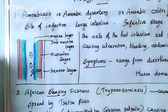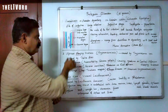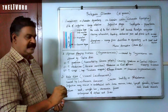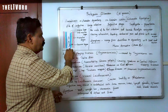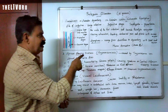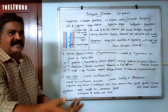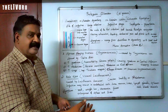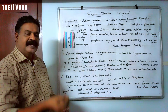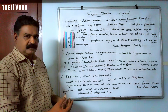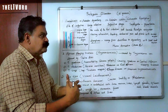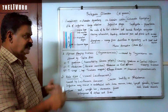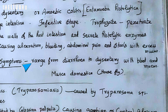The symptoms range from diarrhea to dysentery. Dysentery means passing stools with mucus and blood. Diarrhea involves frequent loose motions, while dysentery involves passage of stools with excess mucus and blood. So the symptoms range from diarrhea to dysentery with blood and mucus. Houseflies act as mechanical carriers transmitting the cysts from contaminated material.